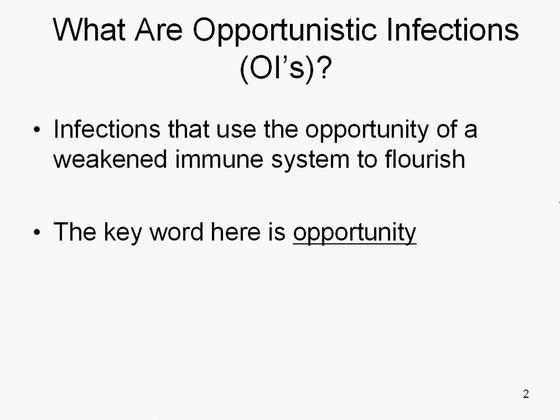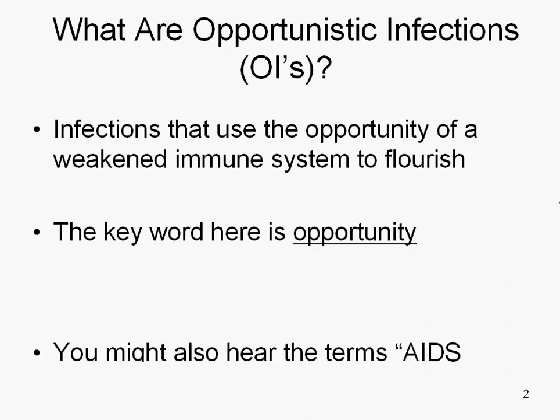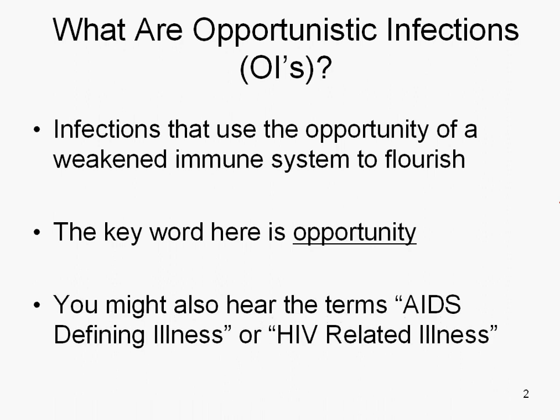The key word here is opportunity, and the opportunity we're really talking about is when HIV has done so much damage to someone's immune system that their immune system can't respond to germs the way that it used to. You might also hear the terms AIDS-defining illness or HIV-related illness, and these opportunistic infections are part of the conditions that can be met for an AIDS diagnosis, like we talked about in a previous lesson.